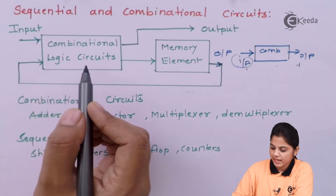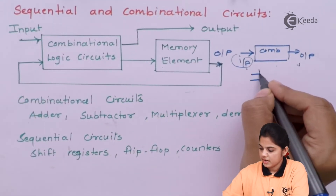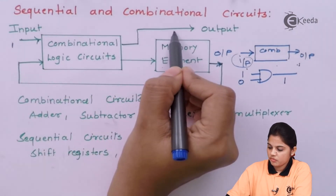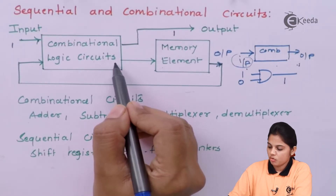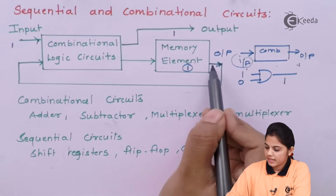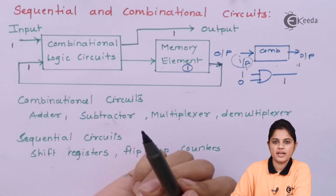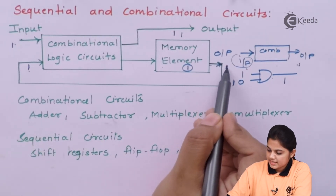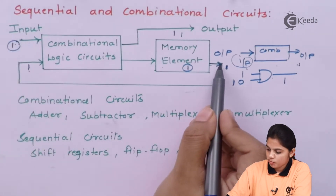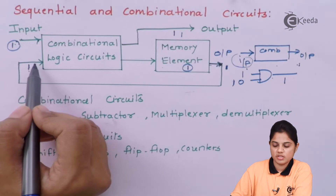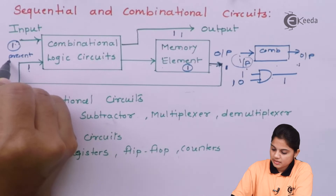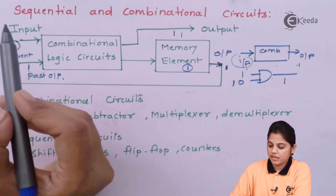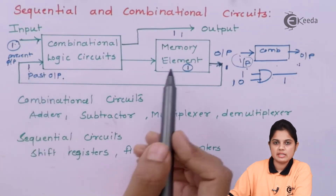Let's take an example of an AND gate as the combinational logic circuit. For inputs 1 and 1, the output should be 1. That output 1 is stored in the memory element and fed back as an input, so again with inputs 1 and 1 the output remains 1. This output depends on the present input and the past output fed back to the combinational logic circuit — the present input here is nothing but the past output. So if the output depends on the present input as well as the past output, that circuit is called a sequential circuit.